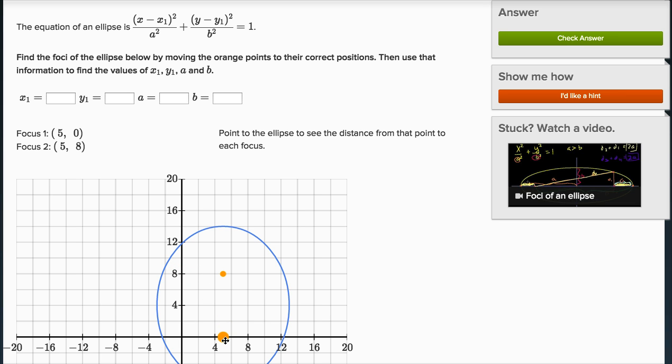And so we would have to find, we would have to find different foci until that sum of the red length and the green length is constant. Now in my mind, that is a hard way to do it.